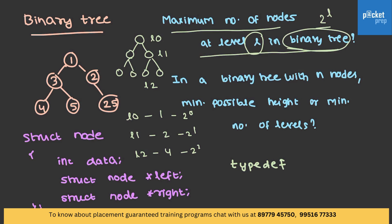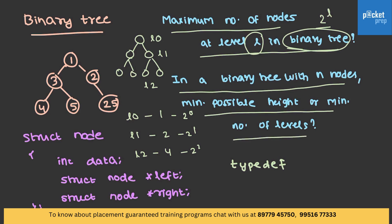Even this question: in a binary tree with n nodes, what is the minimum possible height or minimum number of levels? You can take a tree and assume a value for n, let's say n equals 15. With that, you can represent it in the form of a tree and find out the height or levels asked. But just make sure, before you mark the answer, try it with 2 or more examples, just to be clear.